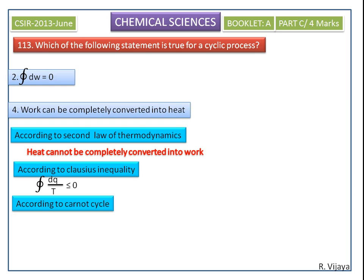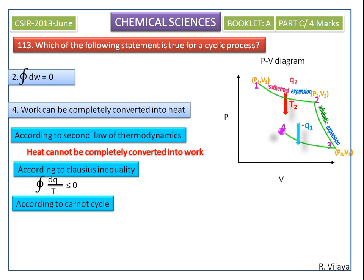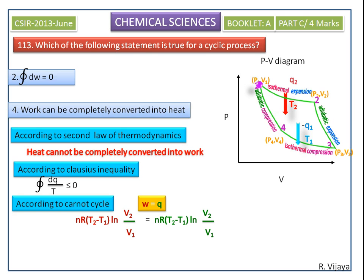In the last video, we discussed Carnot's cycle and we derived the efficiency eta and w is equal to q. That is, work done by Carnot engine is equal to the amount of heat absorbed by the system.